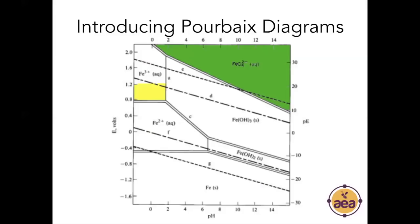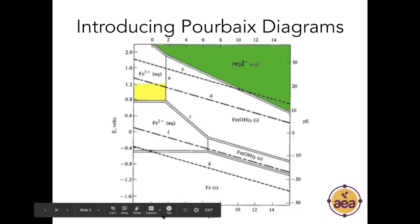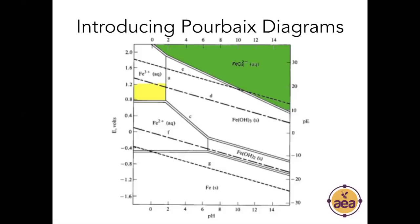I'd like to introduce you to what is known as a Pourbaix diagram or a redox diagram. This is a two-dimensional diagram: across the bottom we have pH from 0 to 14, and on the side we have a redox axis measured in electron volts or PE. Instead of looking at nutrient availability in terms of just left or right on the chart, we should be looking at it diagonally — upper right versus lower left. We can see different oxidation states of iron at different locations all the way from the upper right to the lower left.